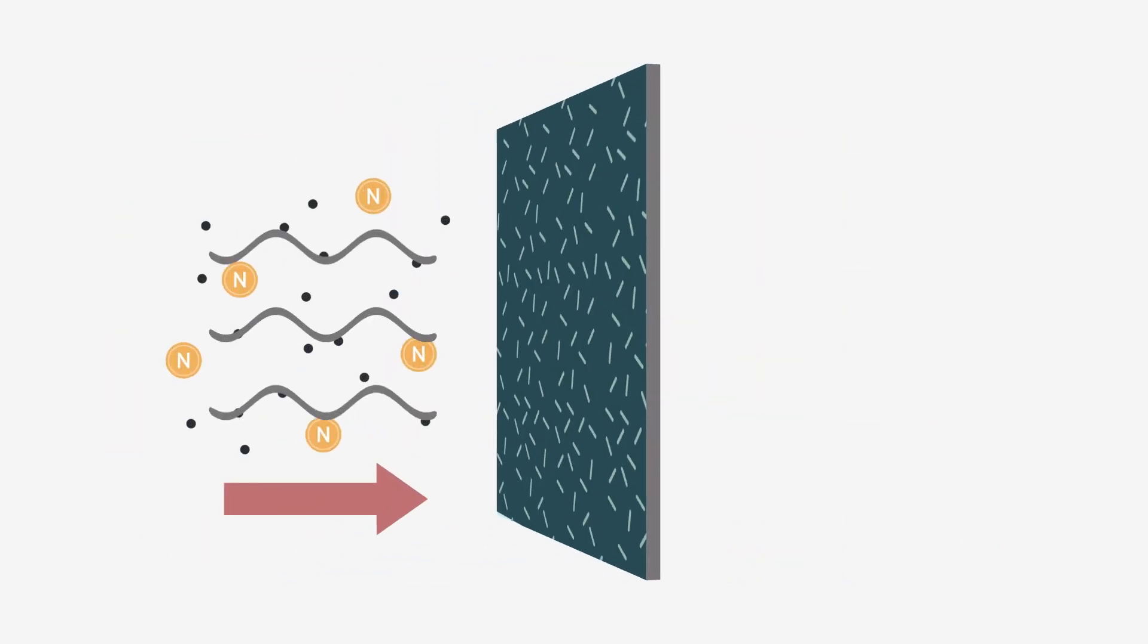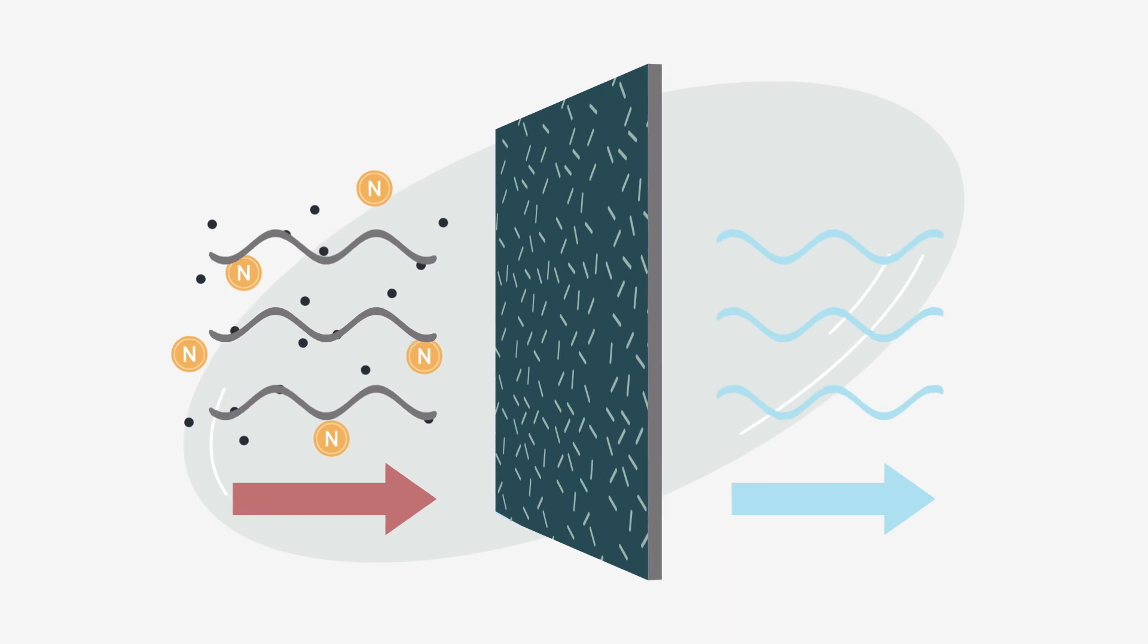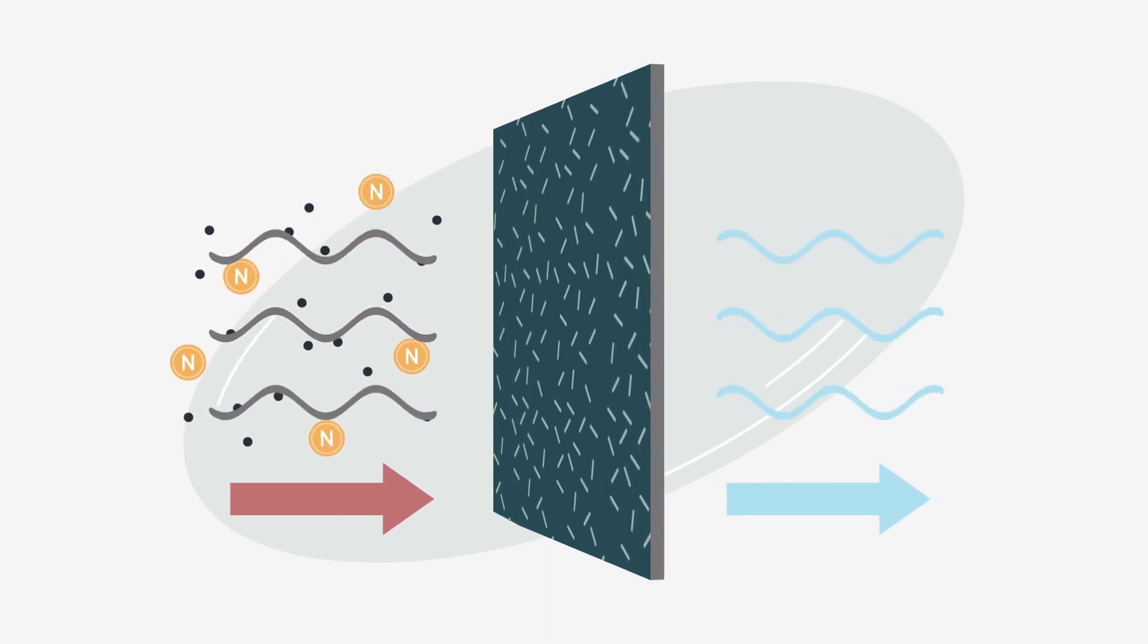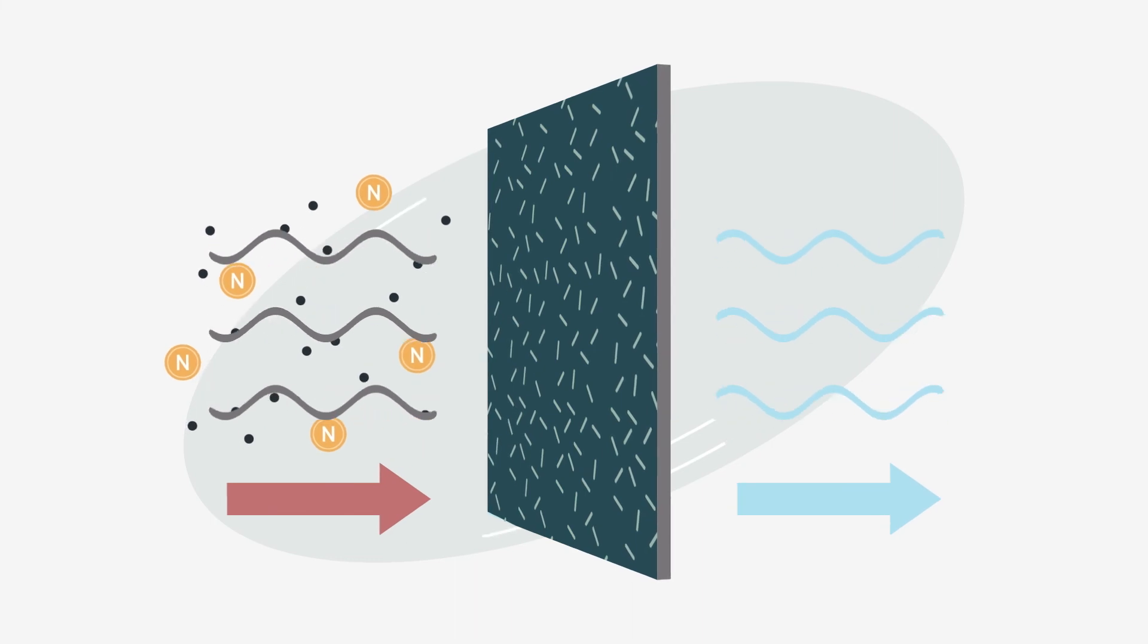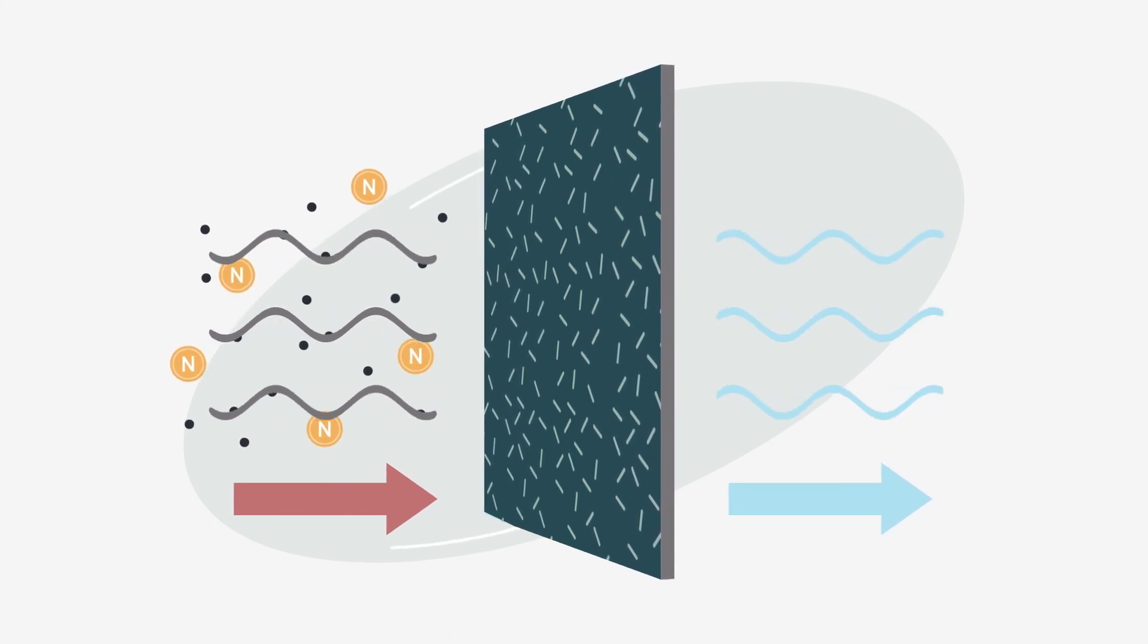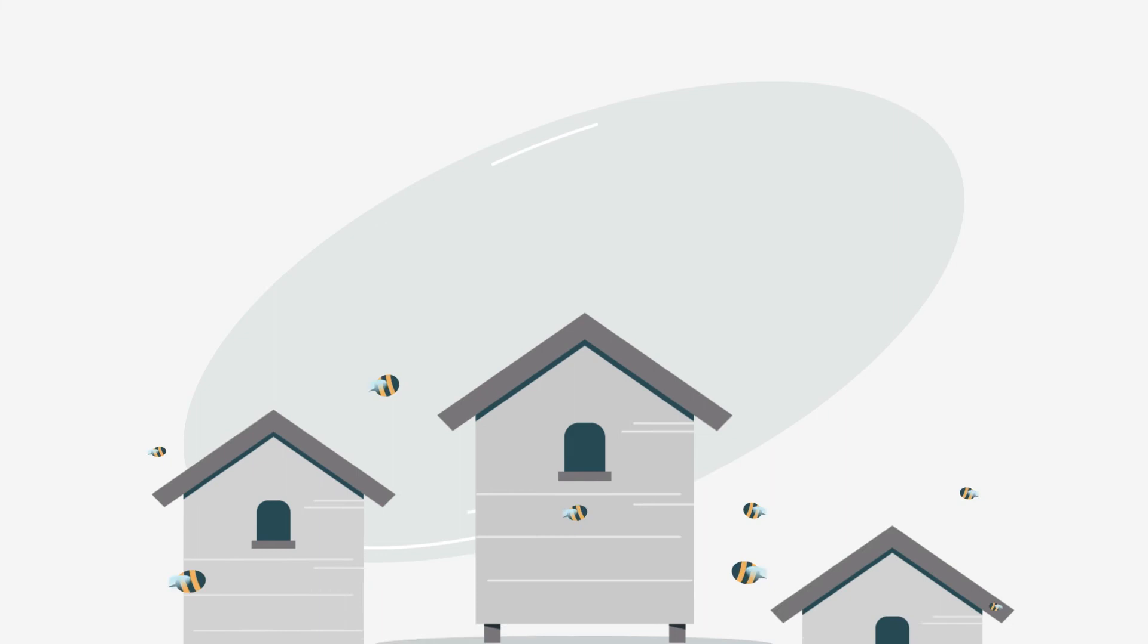We also use the most modern filter technology so that we can manufacture float glass in the most environmentally friendly way possible. They ensure that the exhaust gases from production are largely free of sulfur, dust and nitrogen.